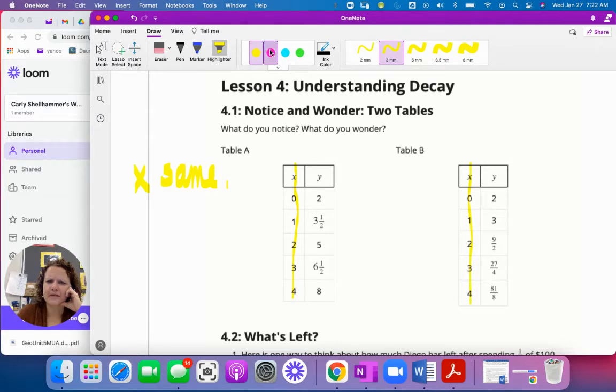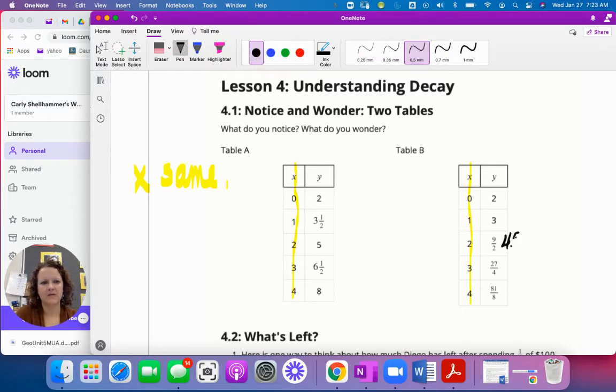For table A, if I look, looks like we're going two, three and a half, five, six and a half, eight. Definitely getting bigger. And the y values over here, we are also getting bigger. We're at two, three, nine halves is 4.5, I'm 21 over four or 27 over four. I don't know what that is. 6.75. Let's get a pen. So 4.5, 6.75 and 10.125.